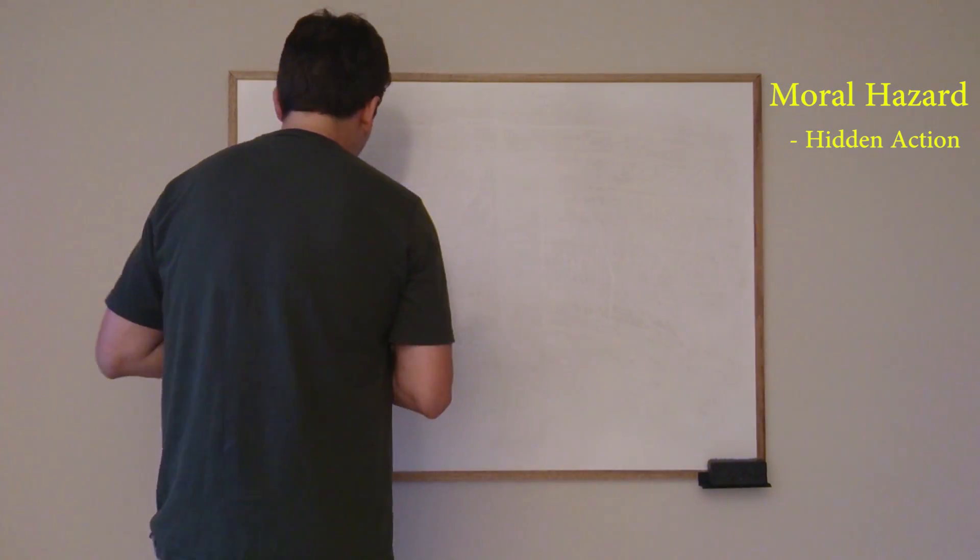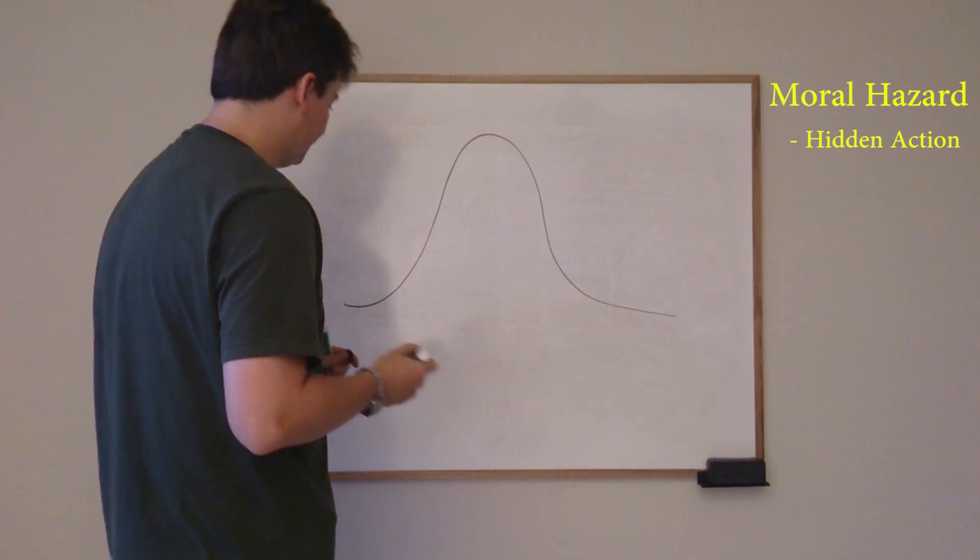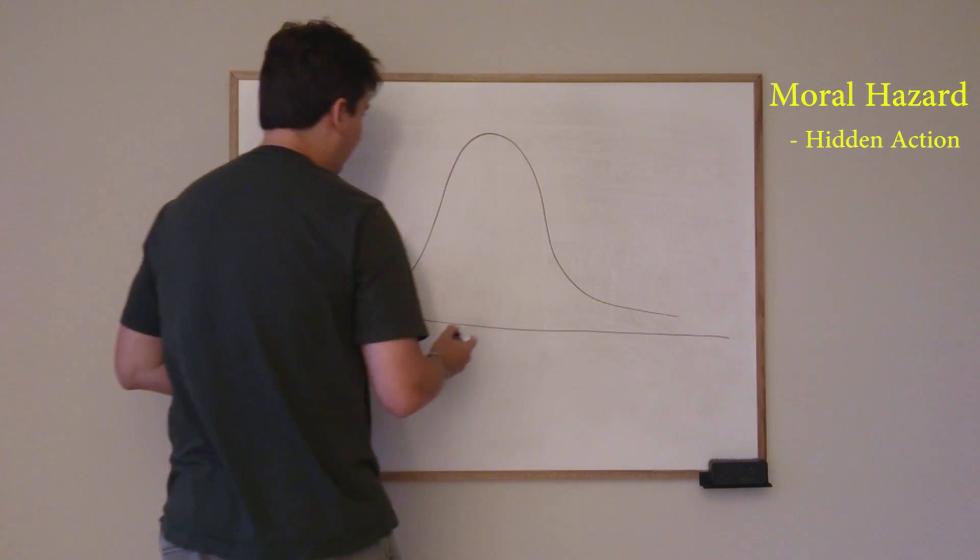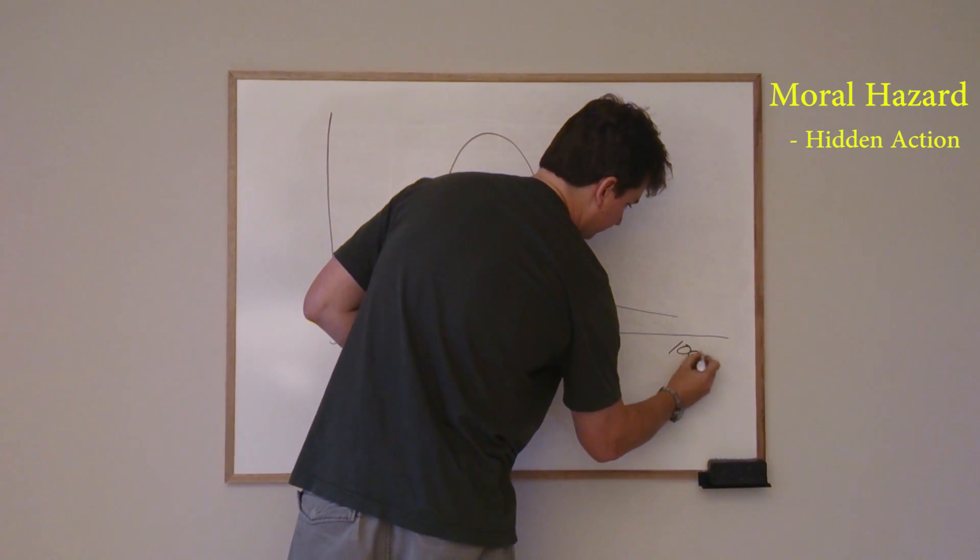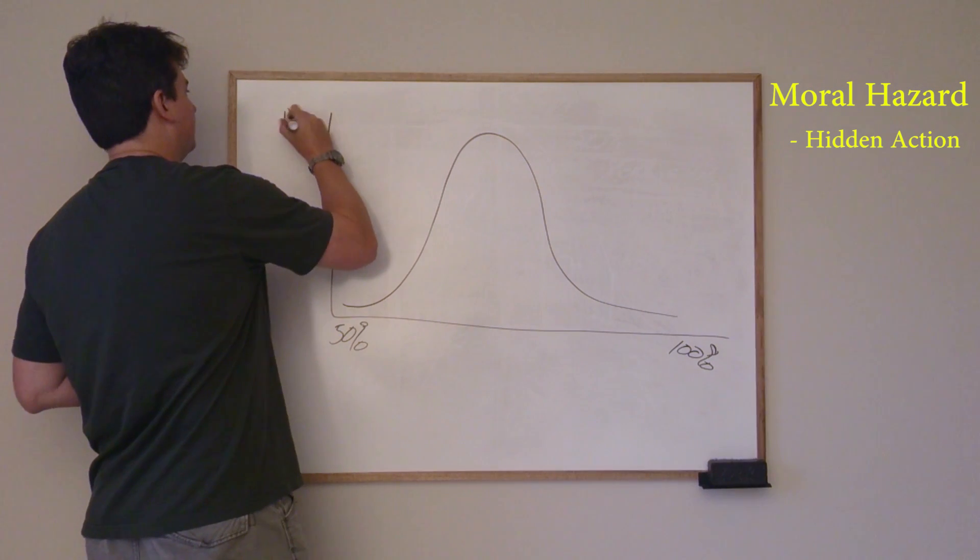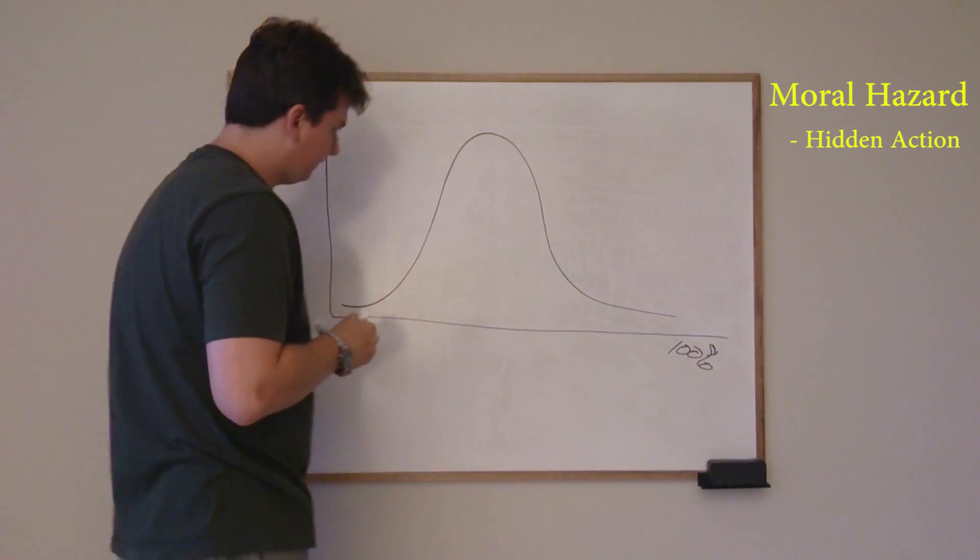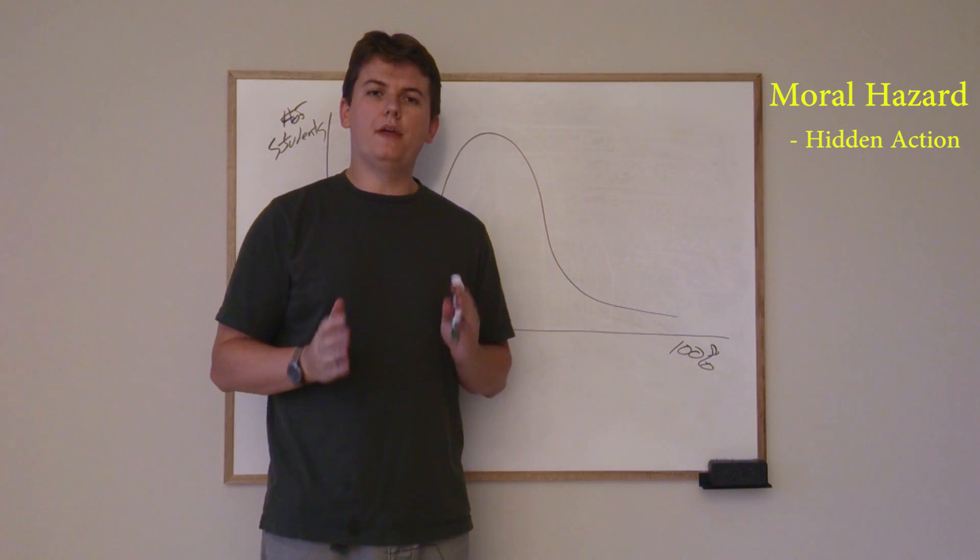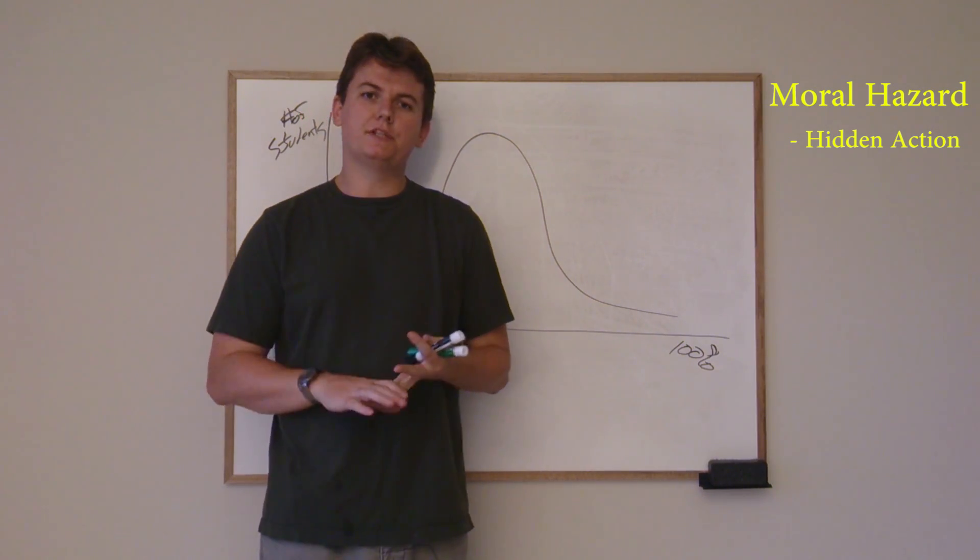So I think you've probably all seen this before, hopefully I can draw it properly. This is a normal distribution curve that you'll see with marks for students. So say like 50% and 100% and this is number of students. So what's going to happen is within certain limits, you know that students marks are associated with or are a result of how much they study and how much they apply themselves.